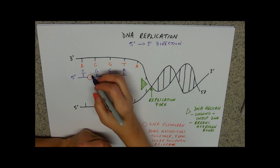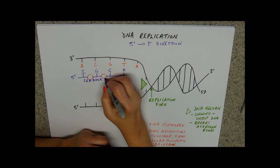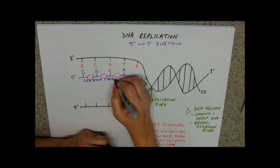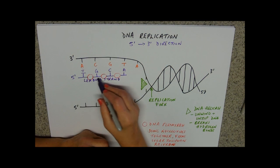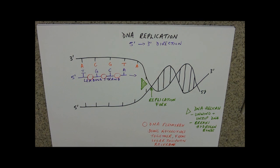This strand here is called the leading strand. It's just going to follow DNA helicase up and it's going to be replicating in that direction.